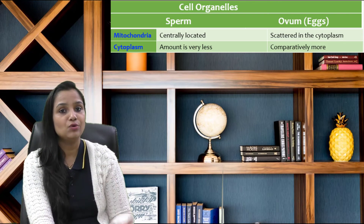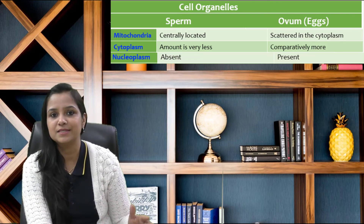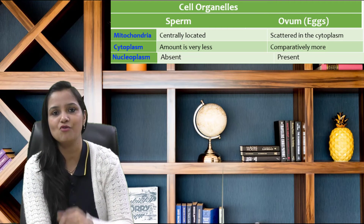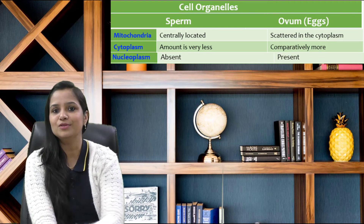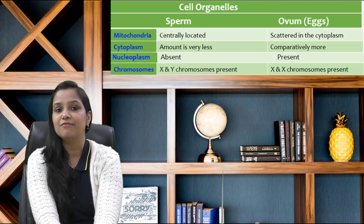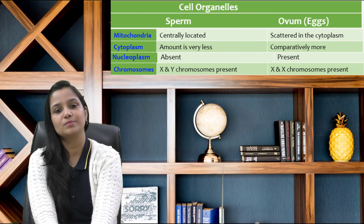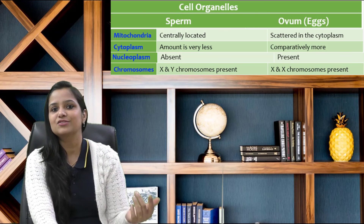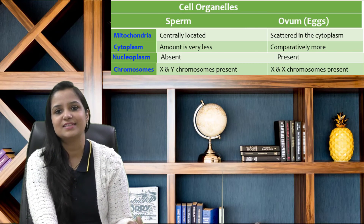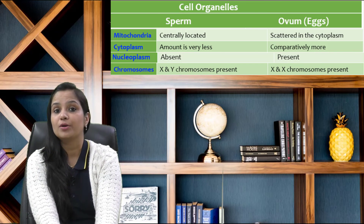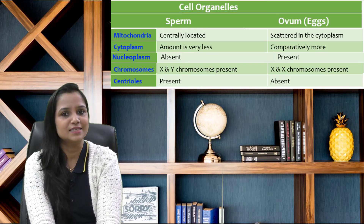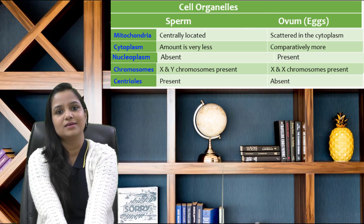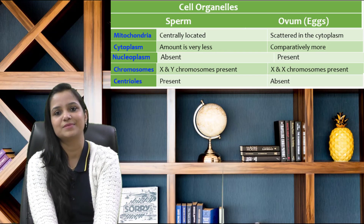When we talk about the nucleoplasm, it is completely absent in the sperm and is present in the ovum. When we talk about chromosomes, X and Y chromosomes are present in the case of male, and XX chromosomes are present in the case of female. When we talk about centrioles, they are present in sperm and absent in the ovum.